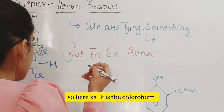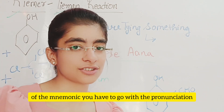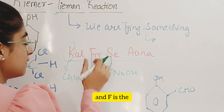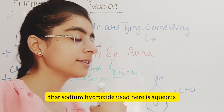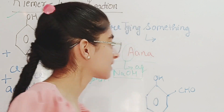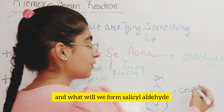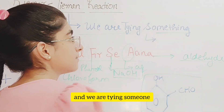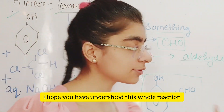In KAL FIR SE AANA, you don't go by spelling but by pronunciation. K is chloroform, F is phenol, S is sodium hydroxide. The sodium hydroxide used here is aqueous — so A stands for aqueous. The product is that an aldehyde group will join. What is formed is salicylaldehyde, that is ortho-hydroxybenzaldehyde. And what we are tying here is a CHO group. I hope you have understood this whole reaction in a very easy way.